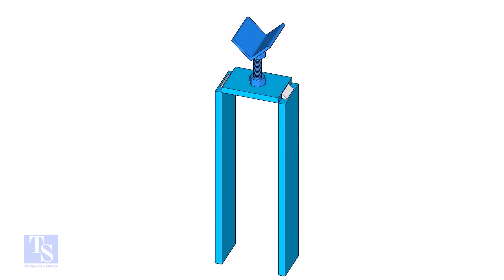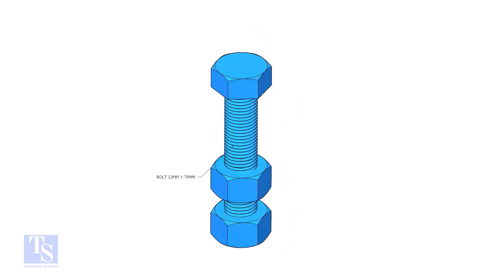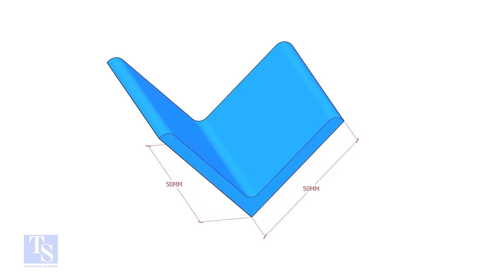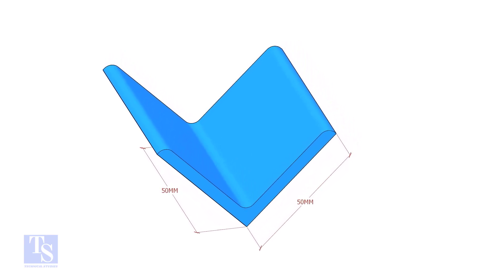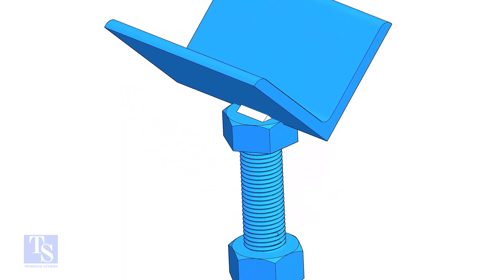To make this tool, we need a half-inch diameter, three-inch long bolt with two numbers of nuts. A 50x50 angle bar, 50mm long. Tack weld the angle bar on the head of the bolt as shown.